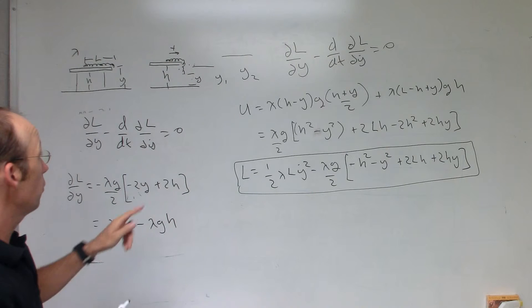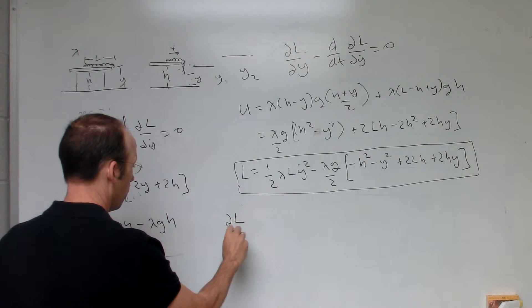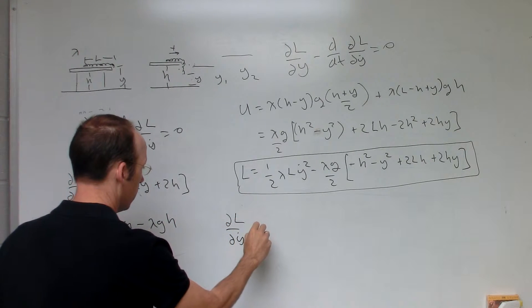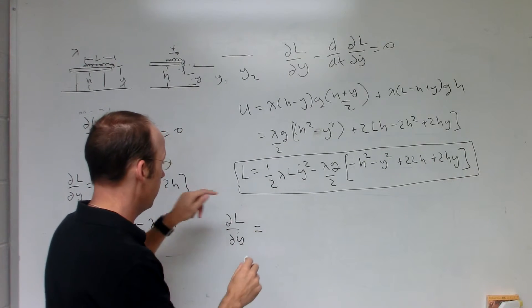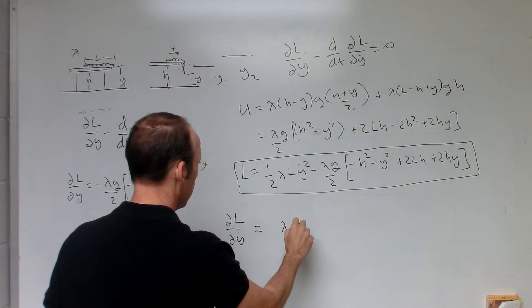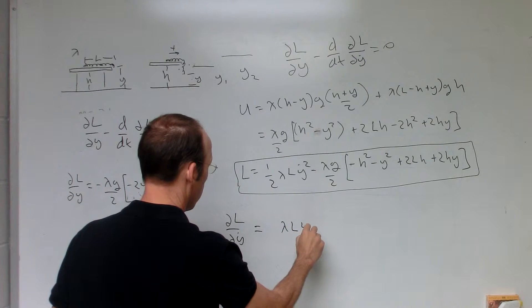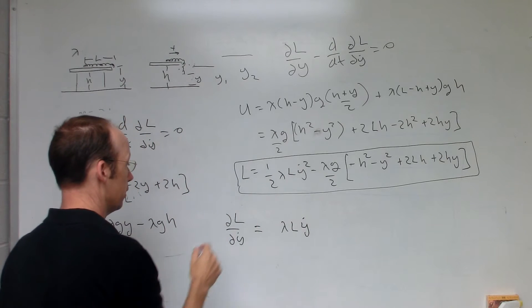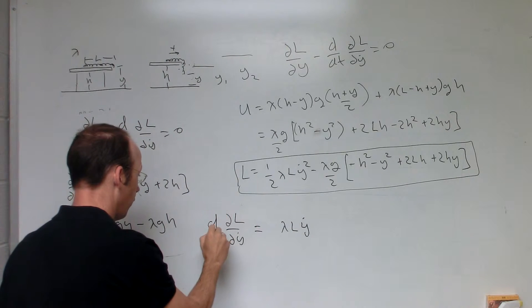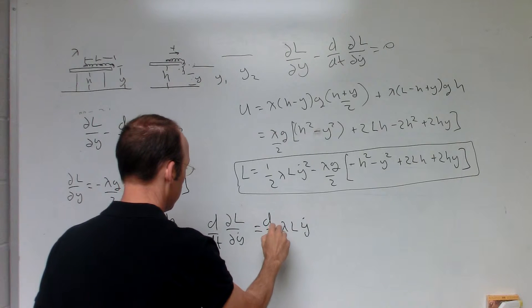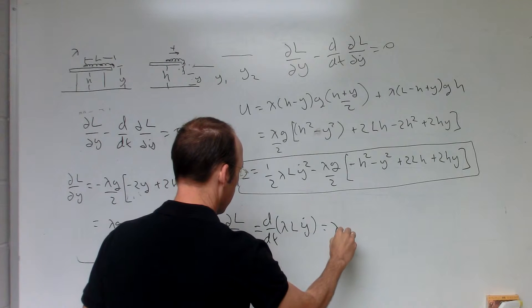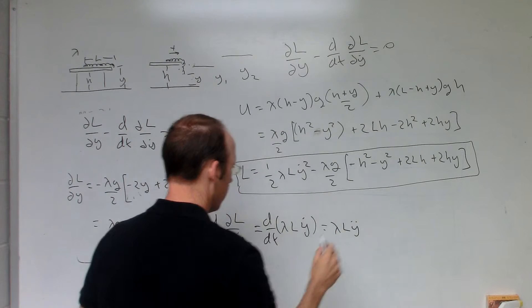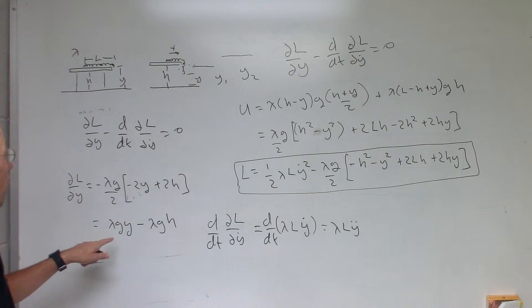So this is going to be lambda g y minus lambda g h. Now I need to do the partial of L with respect to y dot. And there's only one term with a y dot. So it's just this term. So I get lambda l y dot because the 2's cancel. And then I can take the derivative with respect to time.